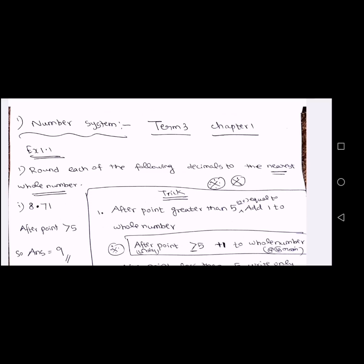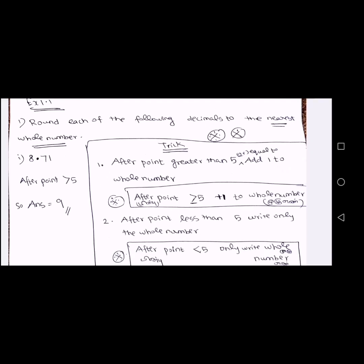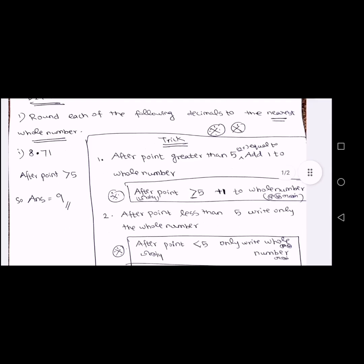Now these are the two tricks. If the digit after the point is equal to 5 or greater than 5, add 1 to the whole number. If the digit after the point is less than 5, only write the whole number as the answer.